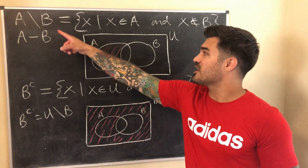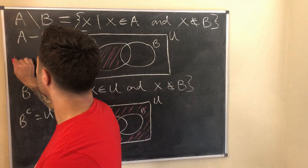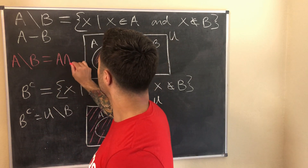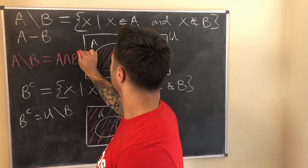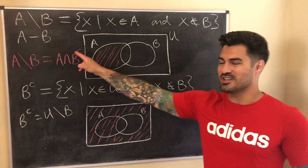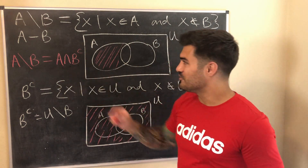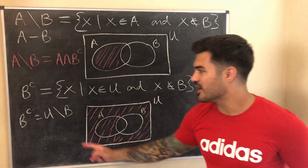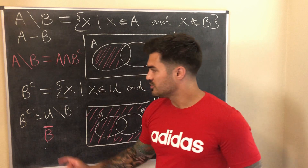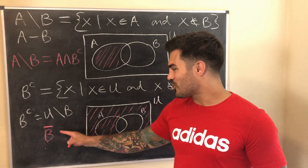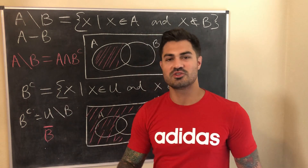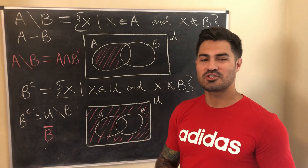Another connection worth noting: A minus B equals A intersect the complement of B — elements in A and not in B — which is literally just the definition. Also, you may see the complement written as B with a bar over it, but that notation can cause confusion (in topology the bar means closure), so I prefer the other notation. Now let's get some practice with an actual example.